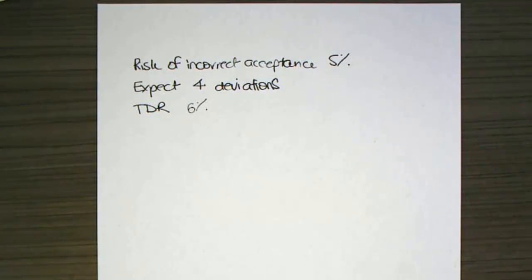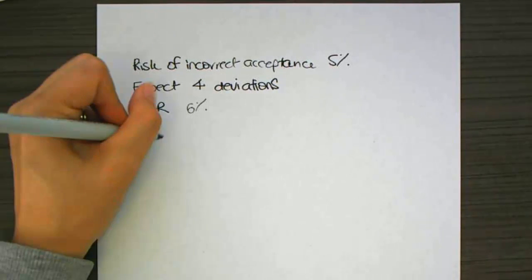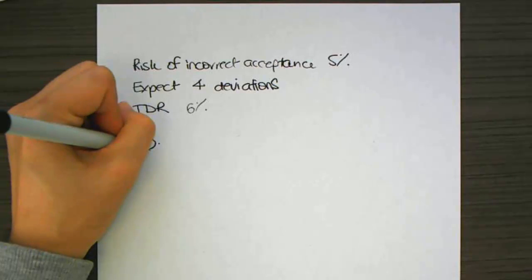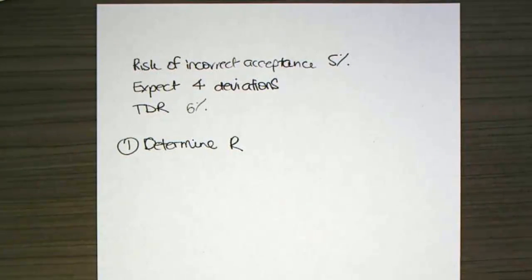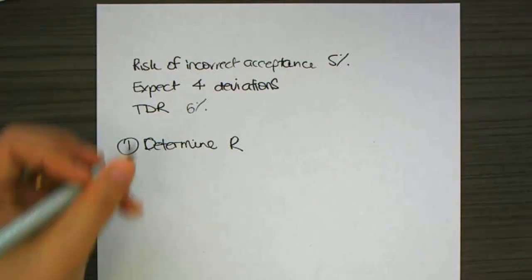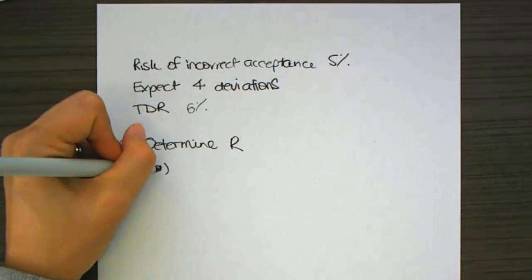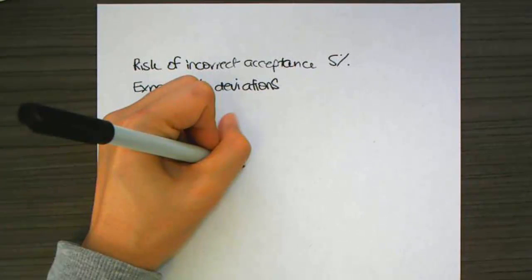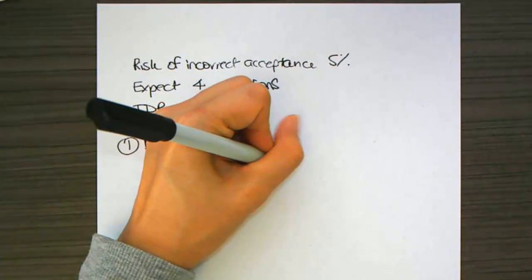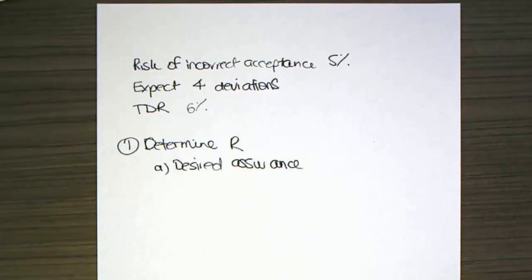The first thing that we need to do is determine R. So to determine R, I need to know what's my desired level of assurance. The first part there, desired assurance. And based on the question where it says incorrect acceptance is 5%, I want to be 95% sure I'm correct. So it's my desired level of assurance.